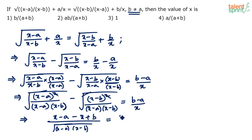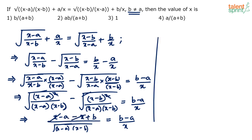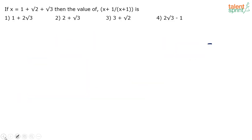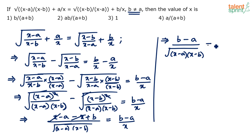The x terms cancel, leaving (b−a) in the numerator on the left-hand side. So we have (b−a) / √((x-a)(x-b)) = (b−a)/x. Since b ≠ a, (b−a) cancels from both sides, giving x = √((x-a)(x-b)).